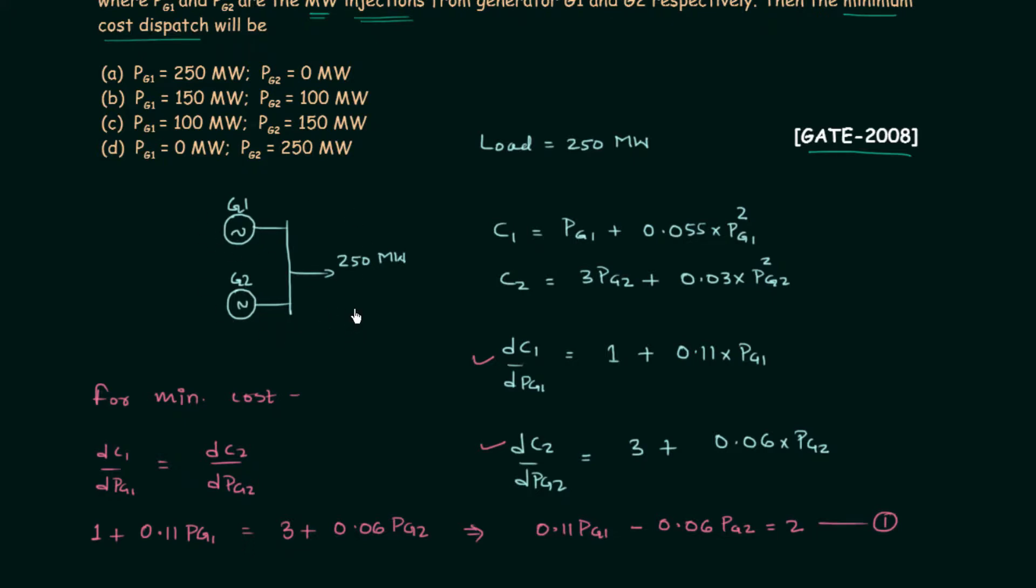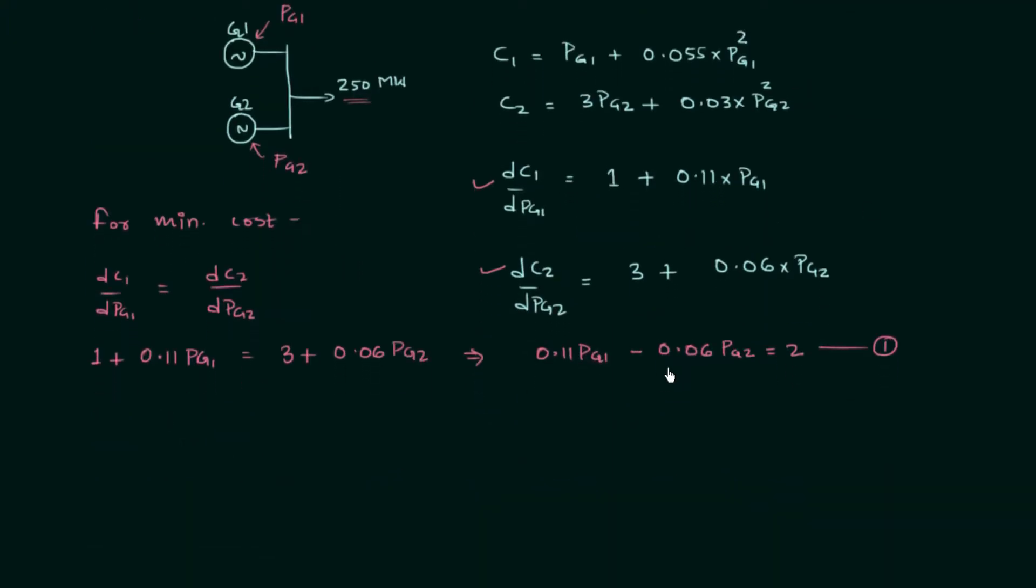Because G1 and G2 are satisfying the load of 250 MW, this means power produced by G1, which is PG1, and the power produced by G2, which is PG2, if added will be equal to 250 MW. So the second equation is pretty simple: PG1 plus PG2 equals 250 MW.